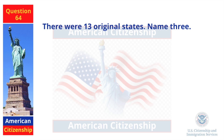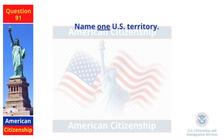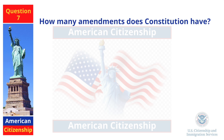There were 13 original states — name three. New York, New Jersey, Pennsylvania. Name one U.S. territory. Guam. How many amendments does the Constitution have? Twenty-seven.